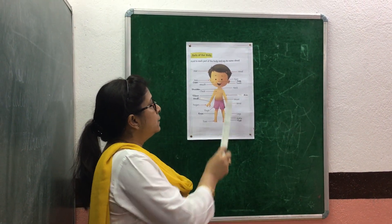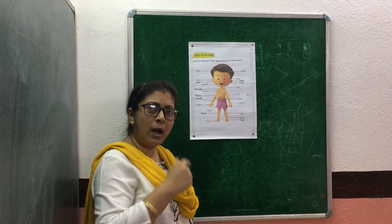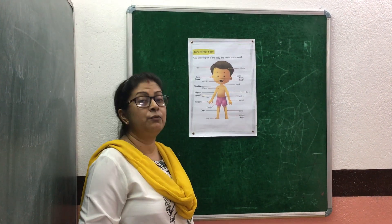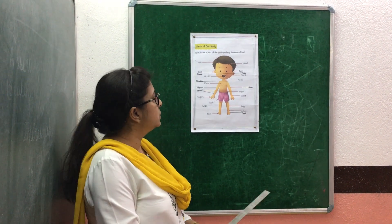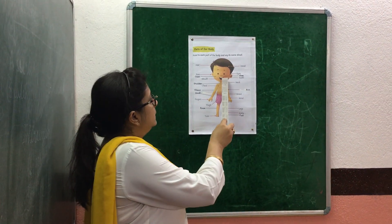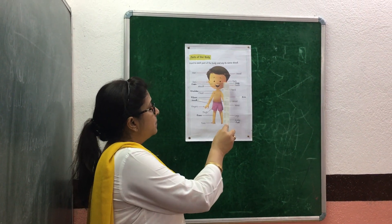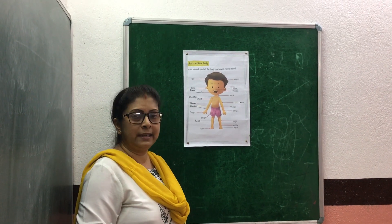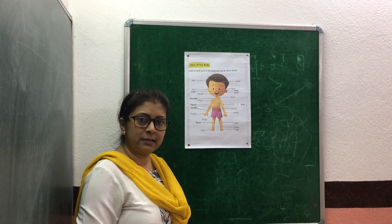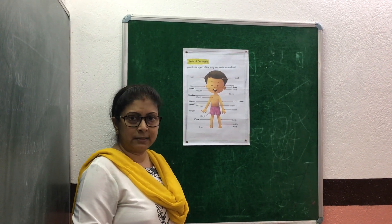This is nose. We have one nose. We smell with our nose. These are teeth. Inside our mouth there are teeth. We chew with our teeth.